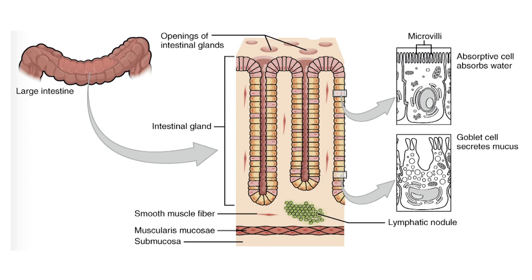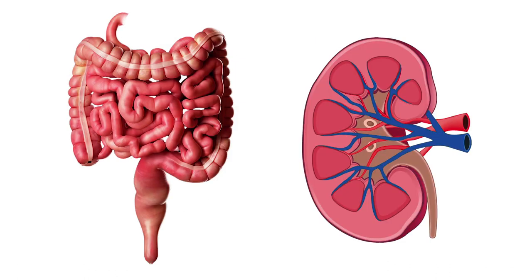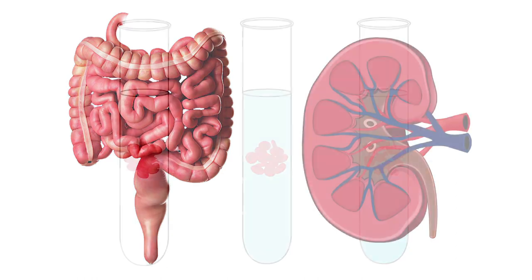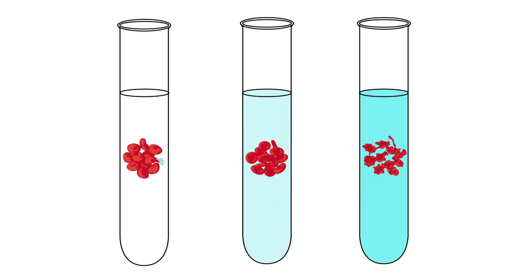Osmosis helps in absorption of water from intestine, kidney, etc. that is exchange of water from body fluids and tissues. Water content of animal cells is maintained by osmosis.